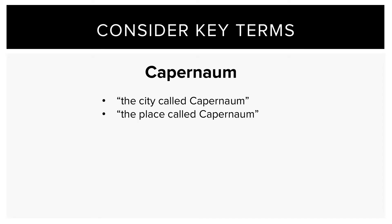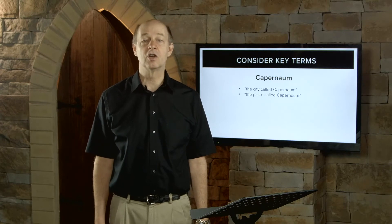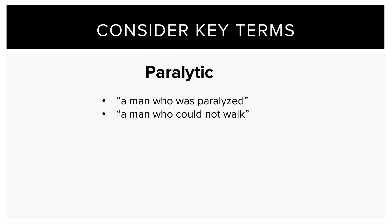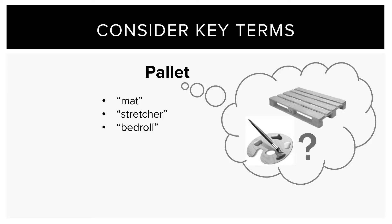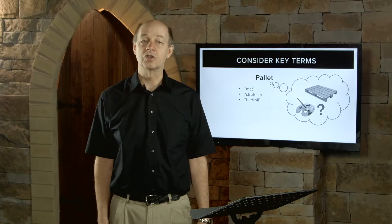For example, the word Capernaum. When we translated this word for the Lamogai speakers, we knew that they would not automatically know that Capernaum is a city or even a place. So sometimes we translated it as 'the place called Capernaum' or 'the city called Capernaum.' Also, the word paralytic — will your target audience understand this word? If not, you may need to unpack the meaning as 'a man who was paralyzed' or 'a man who could not walk.' What does the word pallet mean to you? You may need to use a more appropriate word like mat, stretcher, or bedroll.